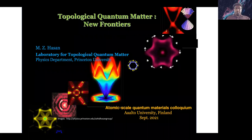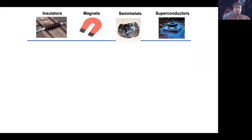In the last 10 years or so, we have seen three-dimensional bulk materials being identified as their topological variants. Even 10 years back when I used to teach condensed matter physics, we would tell students it's about metals, insulators, magnets, superconductors, and their symmetry broken or symmetry related phases.